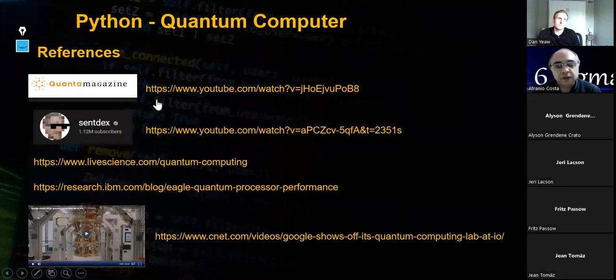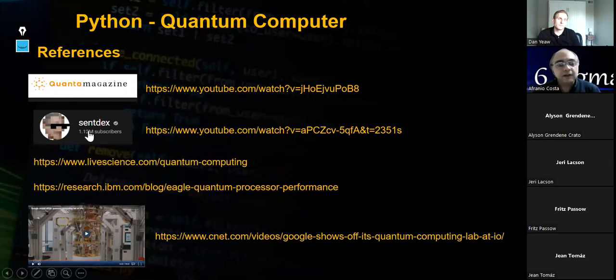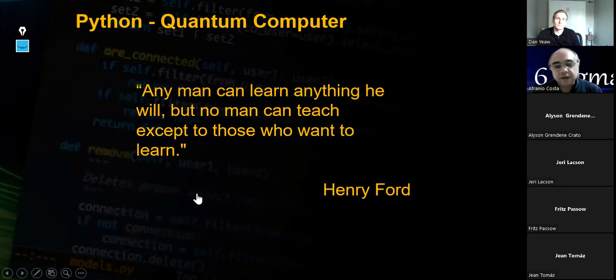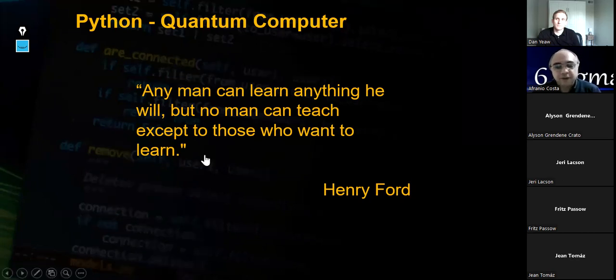Here we have some references that I use to create this material. Then we have Quantum Magazine, a Veritasium YouTube channel. Here we have a video from Veritasium that shows the Google environment in the quantum computer lab. Here we have two papers that discuss about the quantum information, quantum noise, and error correction. And here you have a link of the quantum mechanics from Wikipedia. And to finish, I just like to show you this quote from Henry Ford that said that any man can learn anything he will, but no man can teach except to those who want to learn. Then we live a time of knowledge and we have all resources available to learn what we want.